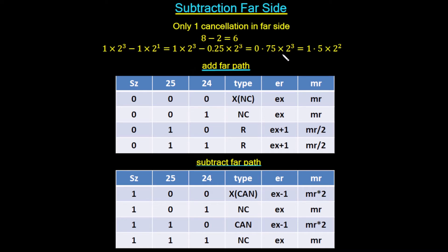After alignment, the subtraction gives 1 minus 0.25 equals 0.75, so the mantissa is less than 1. Since we need a mantissa between 1 and 2, we must normalize: doubling 0.75 gives 1.5, but we then subtract 1 from the exponent, giving 2². So for 8 minus 2 equals 6, a normalization is required due to cancellation.